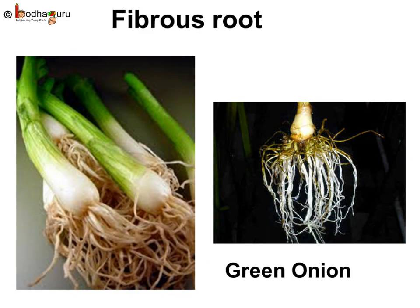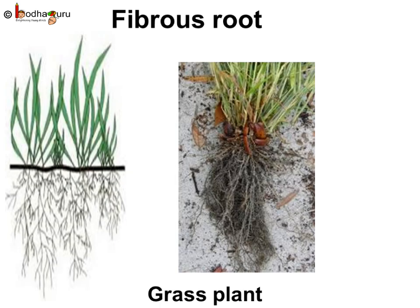Now let us see the roots of the green onion plant. They do not have one main root, as you can see. Instead they have many thin and bushy roots growing from the end of the stem. These tiny and bushy roots are together called fibrous roots. Grass also has many thin roots growing from the end of the stem, so its root is also a fibrous root.